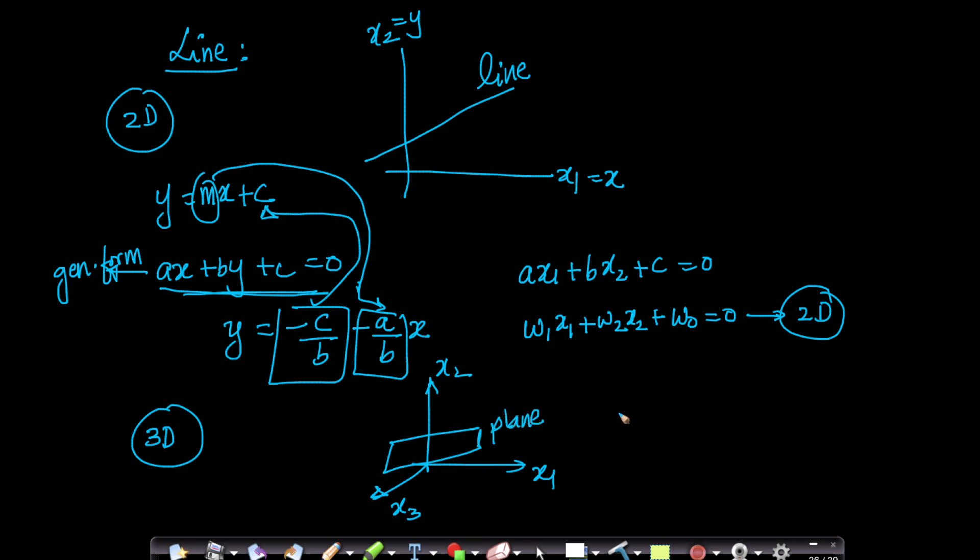And the equation of a plane, for those of you who might remember it, looks like ax plus by plus cz plus d equals 0. This is an equation that some of you may be familiar with. Let us just generalize it. What this looks like is w1x1 plus w2x2 plus w3x3 plus w0 equals 0. This is the equation of a linear surface. This is the equation of a plane. Line in 2D is nothing but plane in 3D.